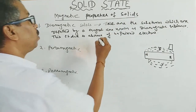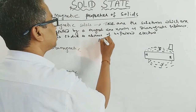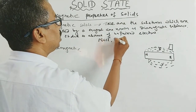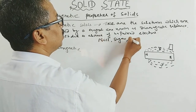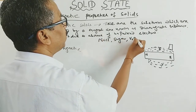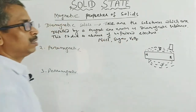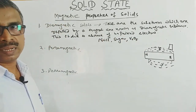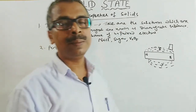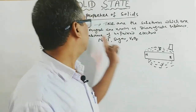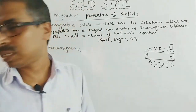For example: NaCl, sugar, B2O5. These are examples of diamagnetic substances.